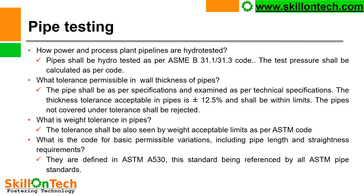What tolerance is permissible in the wall thickness of a pipe? The pipe shall be as per specifications and examined as per technical specifications. The thickness tolerance acceptable in pipe is ±12.5%, and shall be within limits. Pipes not covered under these tolerances shall be rejected.